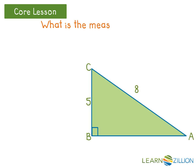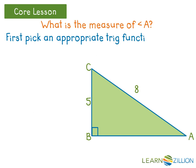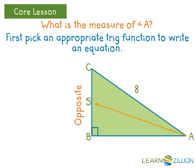What is the measure of angle A? First, we must pick an appropriate trig function to write an equation. Since angle A is our reference angle, we can see that the side length of 5 is opposite the reference angle, and that the side length of 8 is the hypotenuse. The only trig function that works with both the opposite and the hypotenuse is the sine function, so we can write the equation sine of A equals 5 over 8.